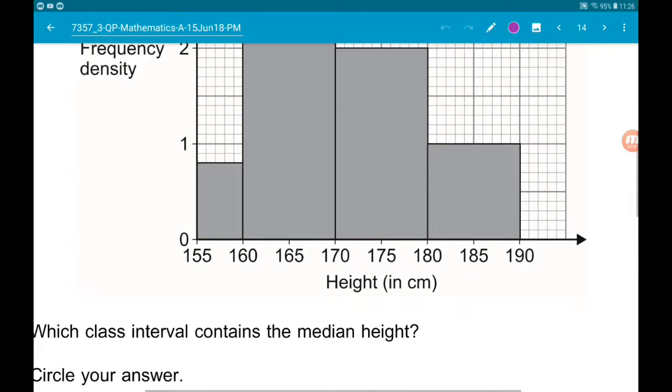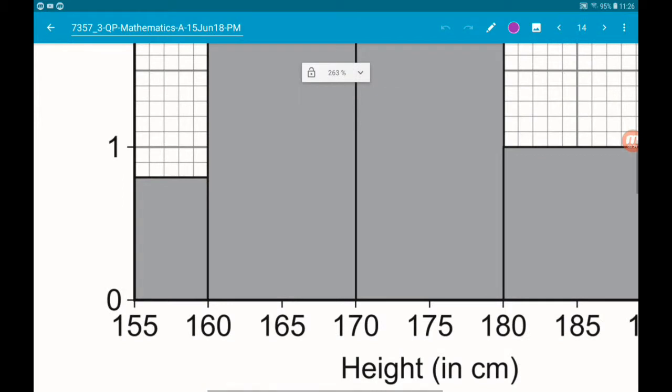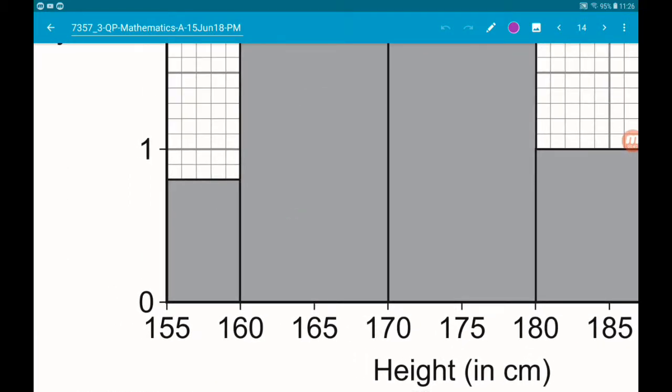So with a histogram, the area of the rectangle represents the frequency in that interval.